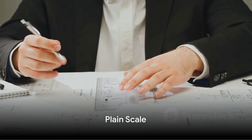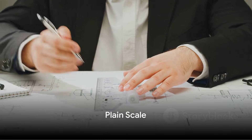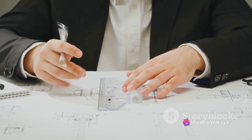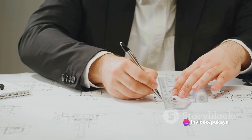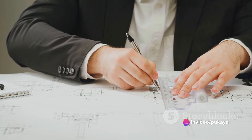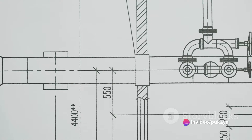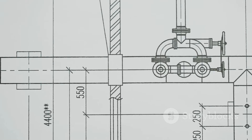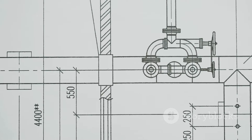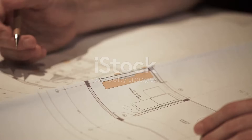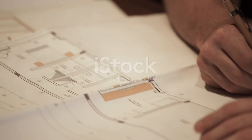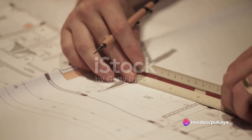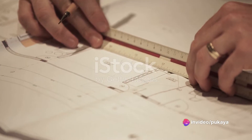First up, let's explore the plane scale. Think of it as a ruler, but not just any ruler. A plane scale is a straight line divided into a certain number of equal parts. Each part represents a fixed unit of length, such as a meter or a foot. The beauty of a plane scale is its simplicity and directness — you can quickly and easily determine lengths and distances on your drawing without any complicated calculations.